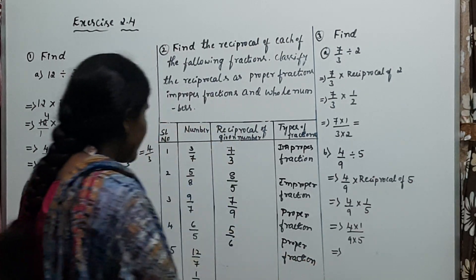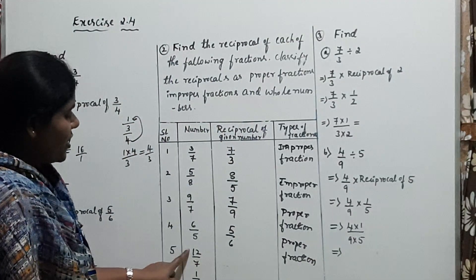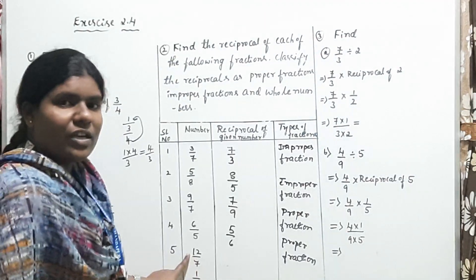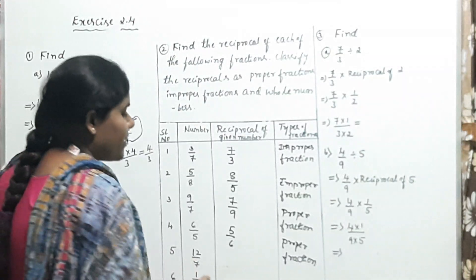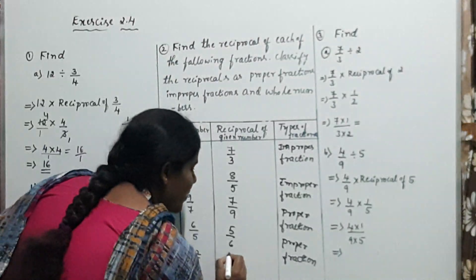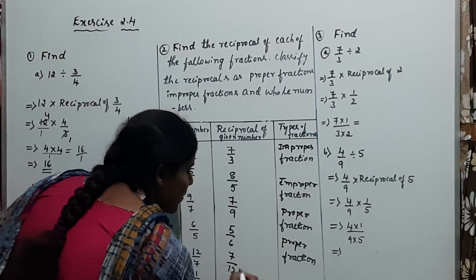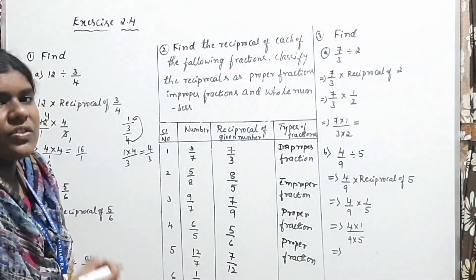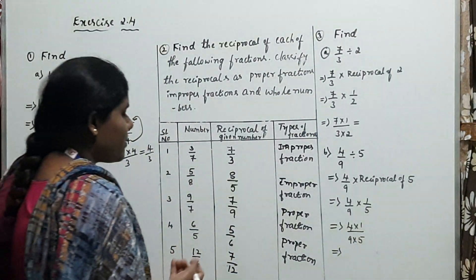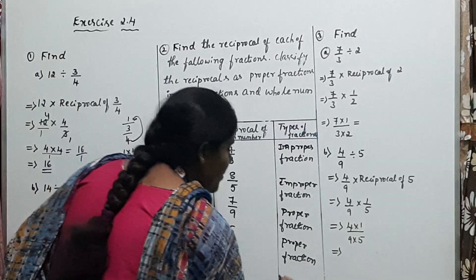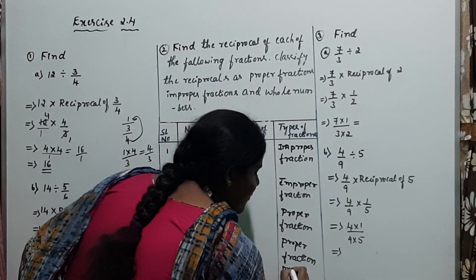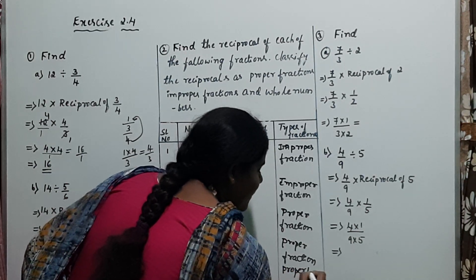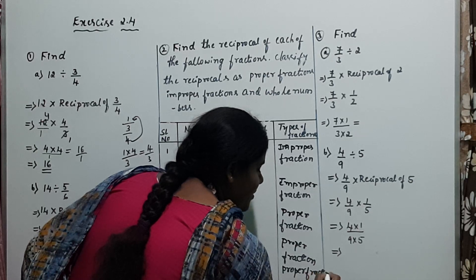Next, the fifth problem: 12/7 is given. The reciprocal of 12/7 is 7/12. Which type of fraction is this — proper or improper? This is also a proper fraction.